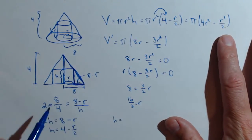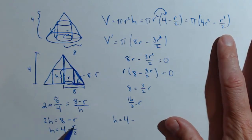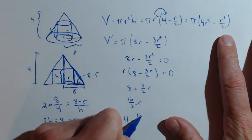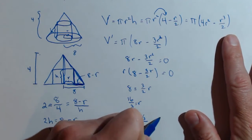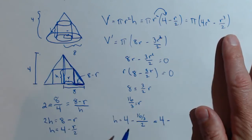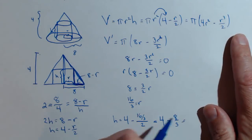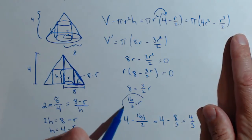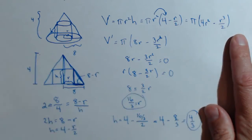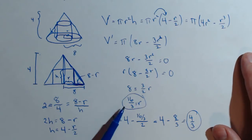To find the corresponding height, we already have the relationship h equals 4 minus r over 2. Substituting r equals 16 thirds divided by 2, that's 8 thirds, so h equals 4 minus 8 thirds, which is 12 thirds minus 8 thirds, giving h equals 4 thirds. Those are the dimensions of the cylinder of maximum volume.